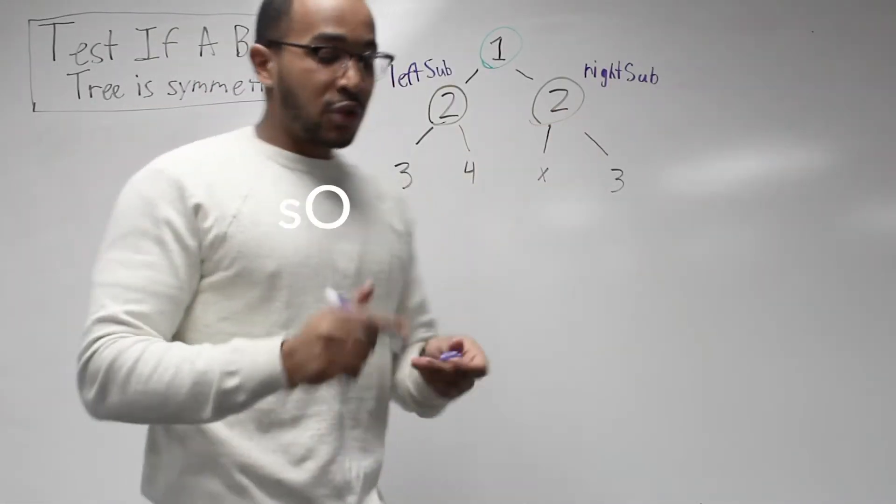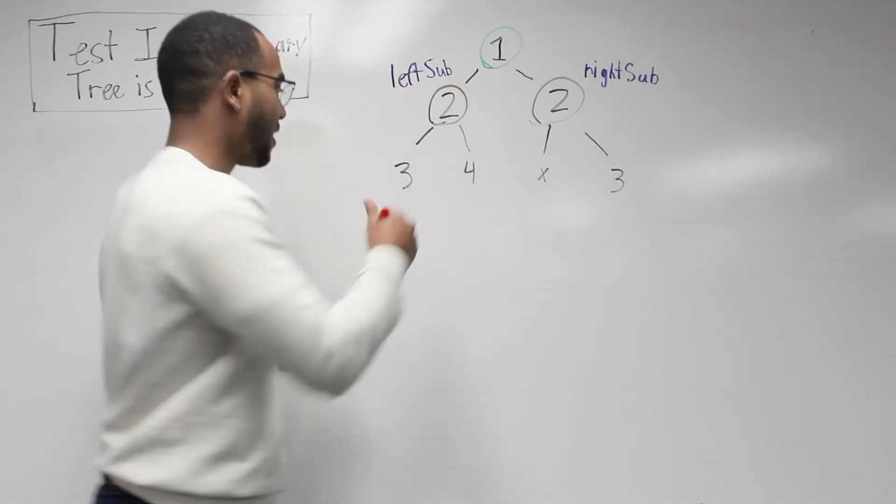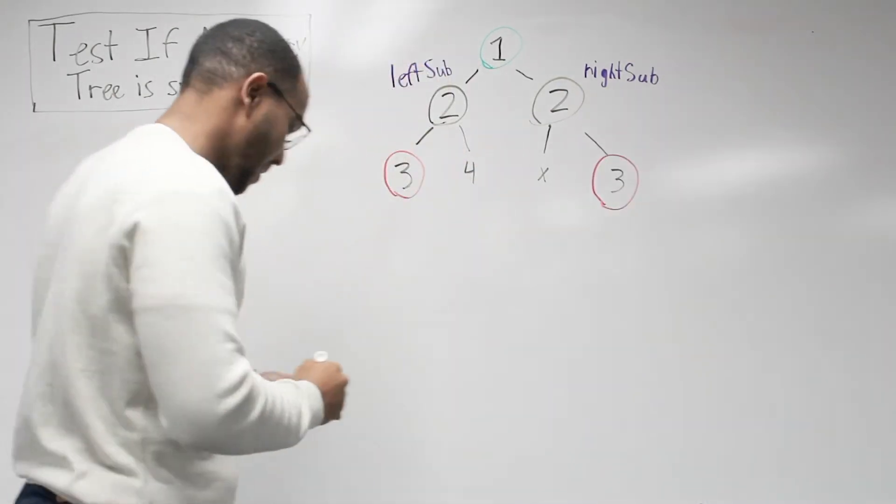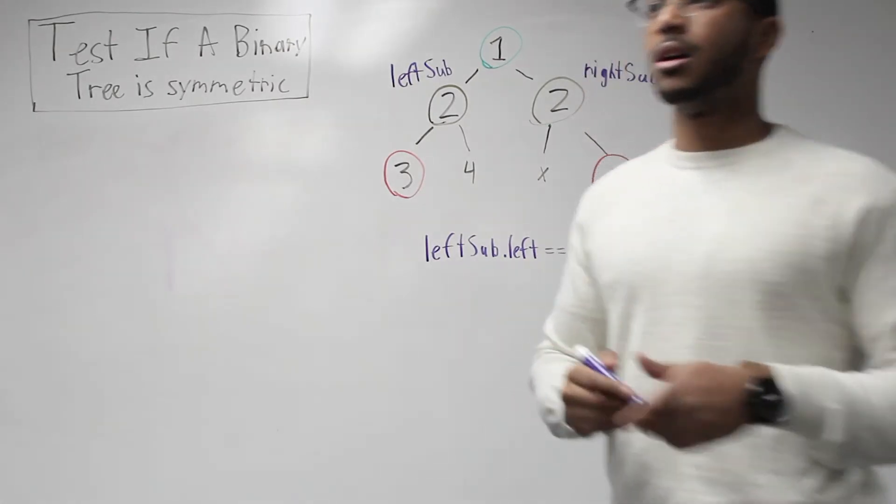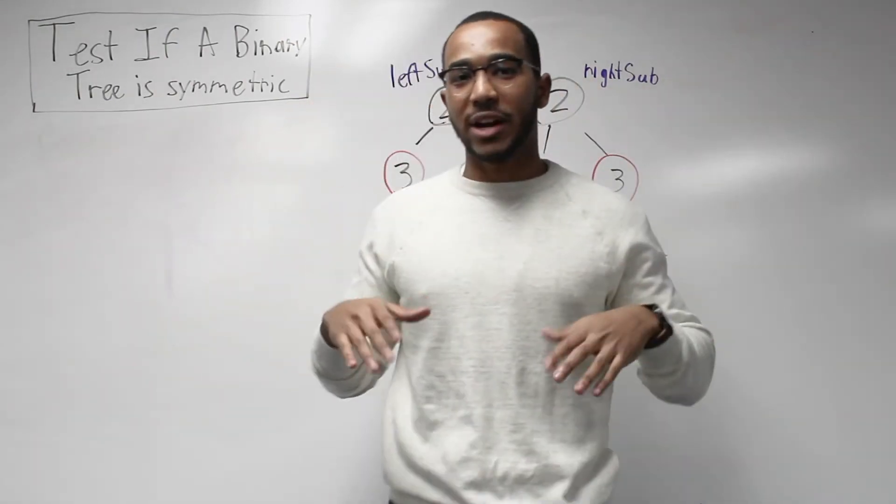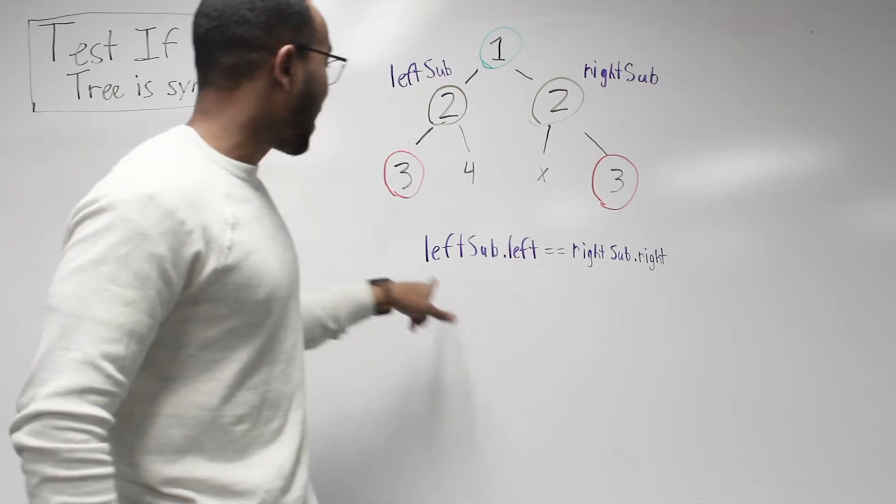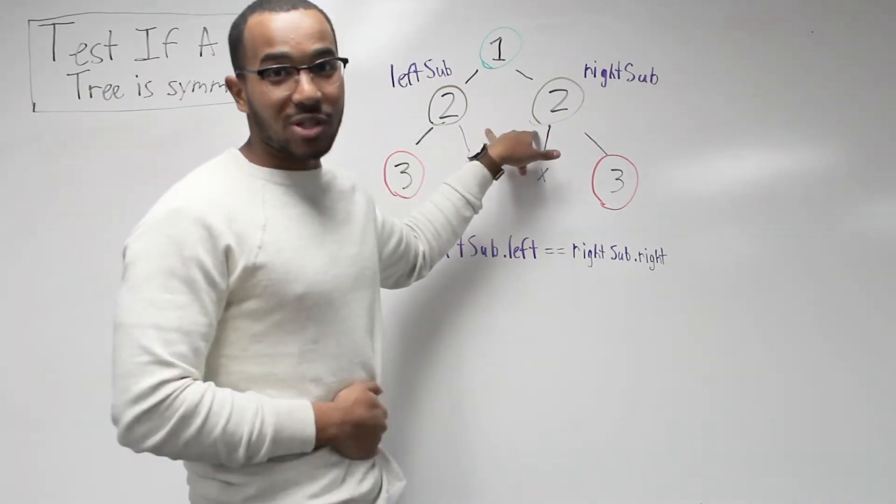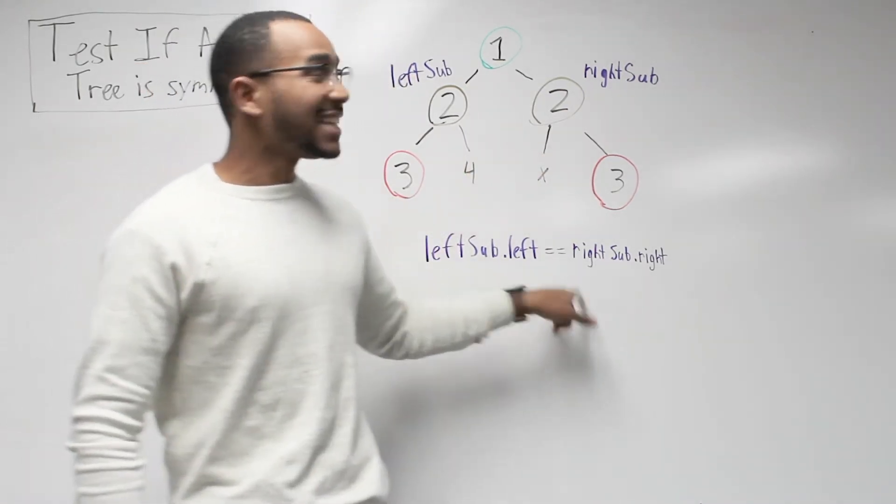Now let's get back to the binary tree and see what pairs we need to compare. Let's color code everything. Here's our example. Remember pair comparisons. Now we're thinking, forget the code, do this in your head. First off, we know the root, no matter what, a root is symmetric by itself. We don't even need to think about pair comparison.